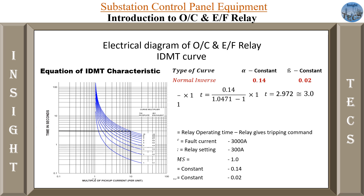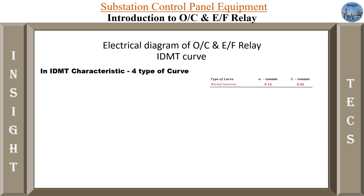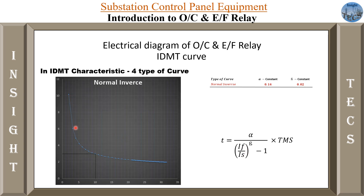This is how the plotting of the graph is done. Taking different values of plug setting multiplier for IF and IS and plotting the curve, this kind of curve will be observed. For PSM equal to 10, the value of time is 3 seconds. For different plug setting multiplier values, all these different points are achieved, and this is how the normal inverse curve is plotted.